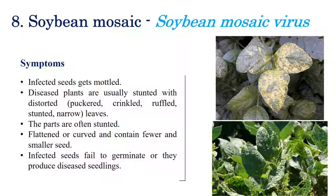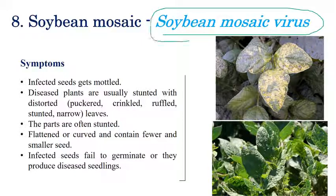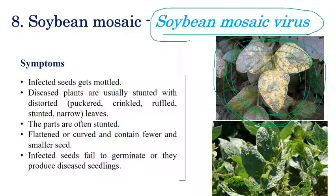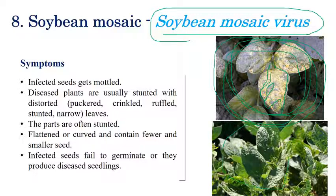The next disease is Soybean Mosaic, caused by Soybean Mosaic Virus. Infected leaves become mottled — mottling means alternate green and yellow patches. Infected leaves are also puckered, crinkled, and show bending and stunting. Infected plants are often stunted in growth and fail to produce good quality seeds, seedlings, and pods.